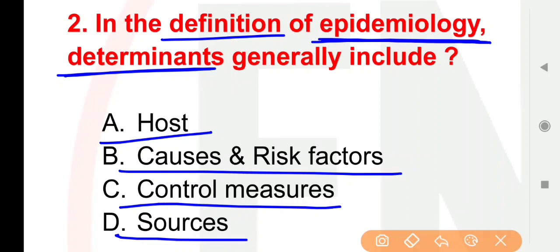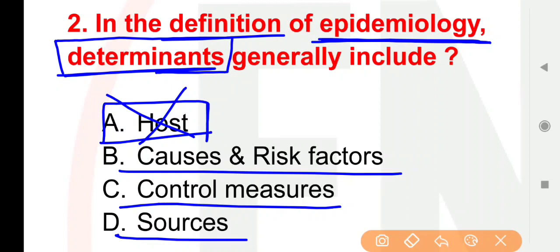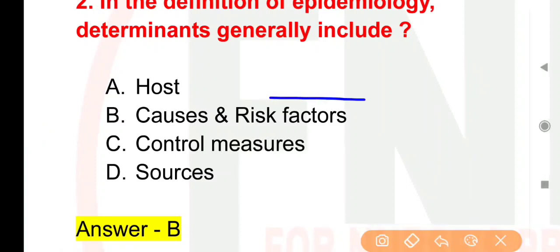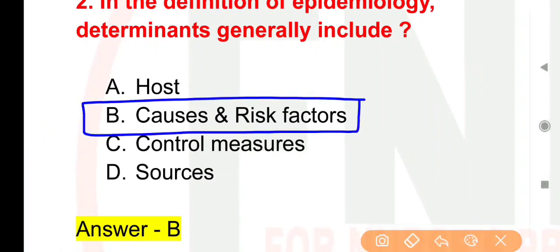Is question ka answer savdhani se dijiyega. Agar aap option A ko answer maante hain, toh yeh bilkul galat hai. Yahan par determinants puchha gaya hai — epidemiology ke determinants. The right answer is option B: Causes and risk factors are the determinants.